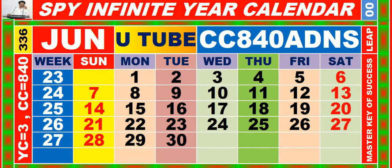Calendar for the month of June, having calendar code equal to 840.